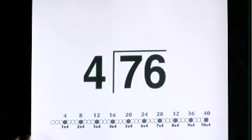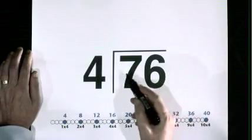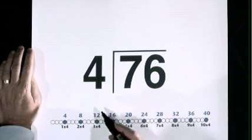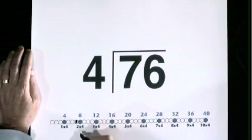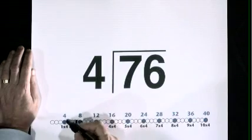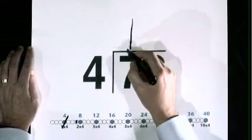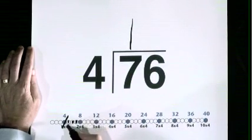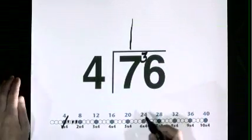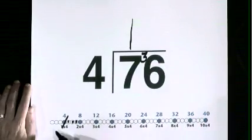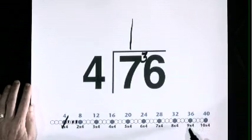76 divided by 4. 4 goes into 7. 7 lives here. 4 goes into 7, 1 time. 9, and 3 left over, remainder 3. 4 goes into 36, 9 times.